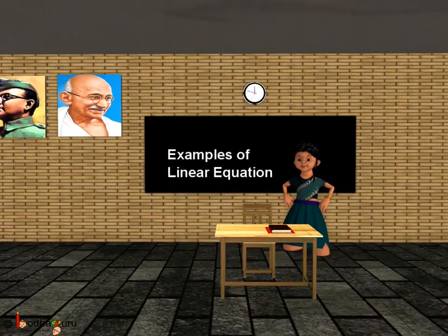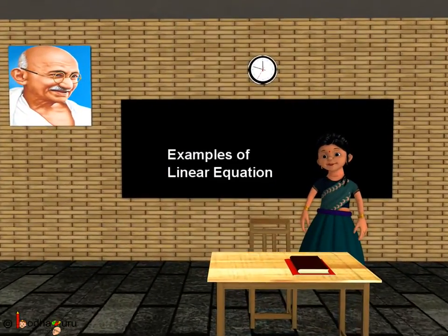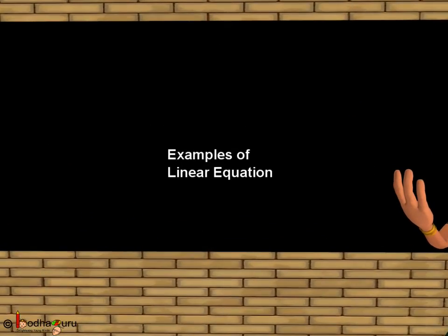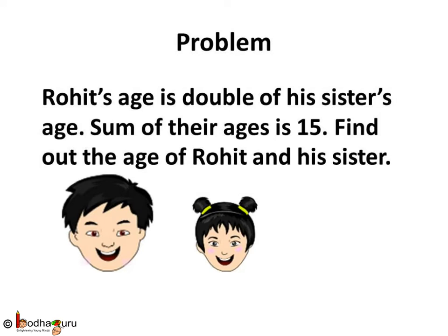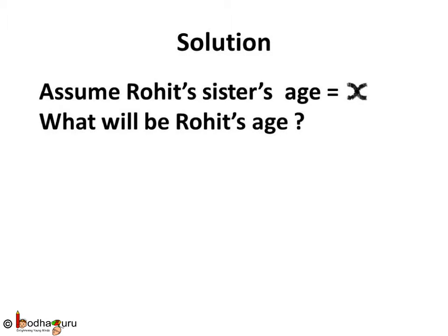Good morning children. Now you know how to solve linear equations with one variable. So let us take more examples. Rohit's age is double of his sister's age. The sum of their ages is 15. Find out the age of Rohit and his sister. Let us assume Rohit's sister's age is equal to x.